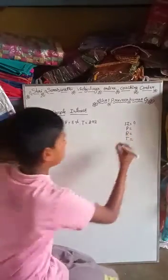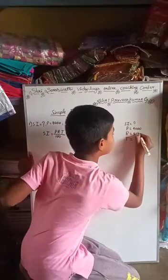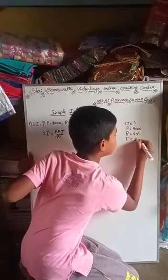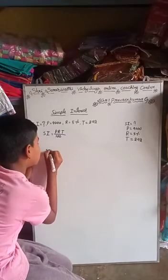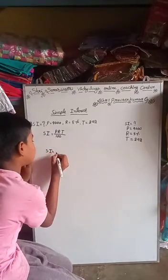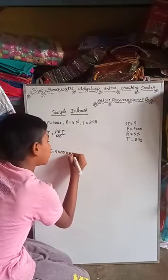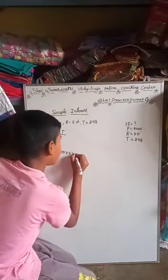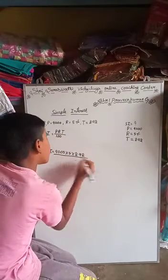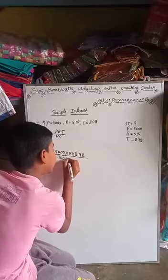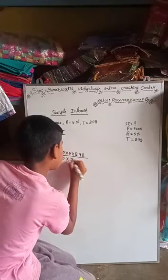Principal is 9000, Rate is 5, Time is 292 days. So SI equals 9000 into 5 into 292, divided by 100, divided by 365 days.